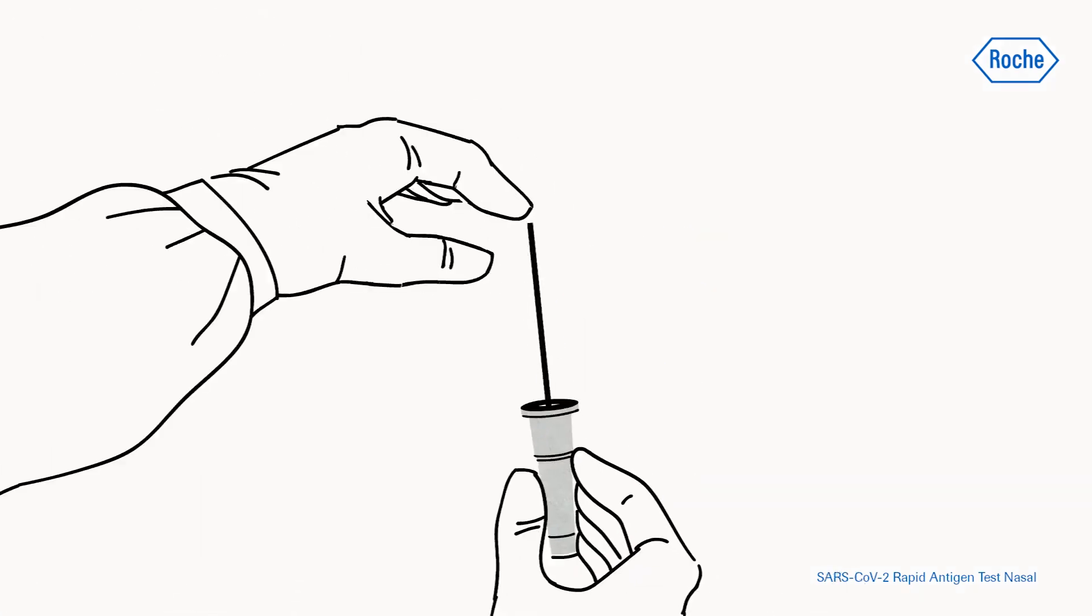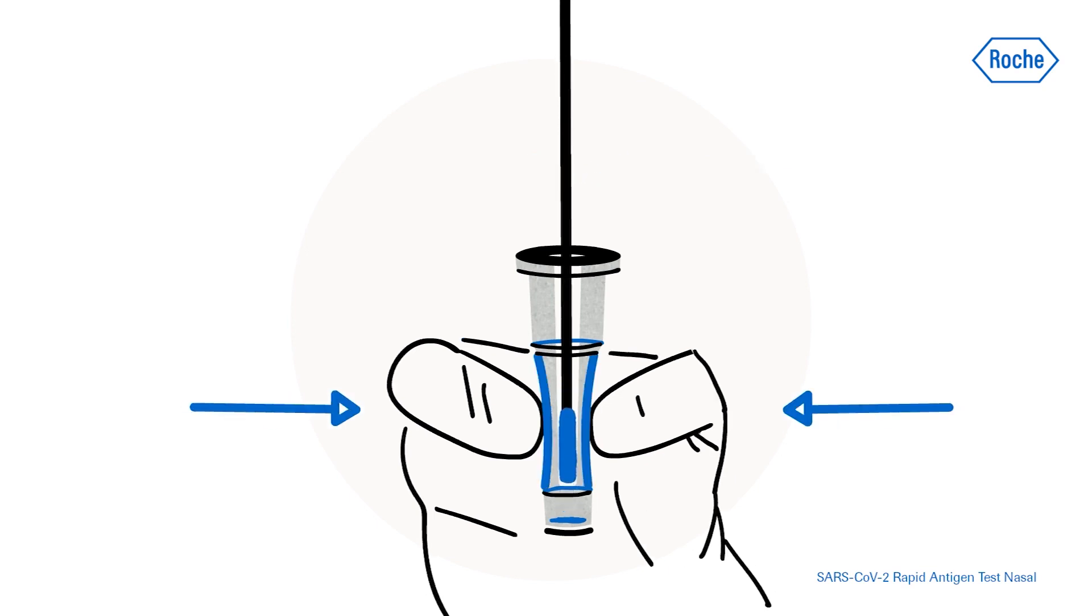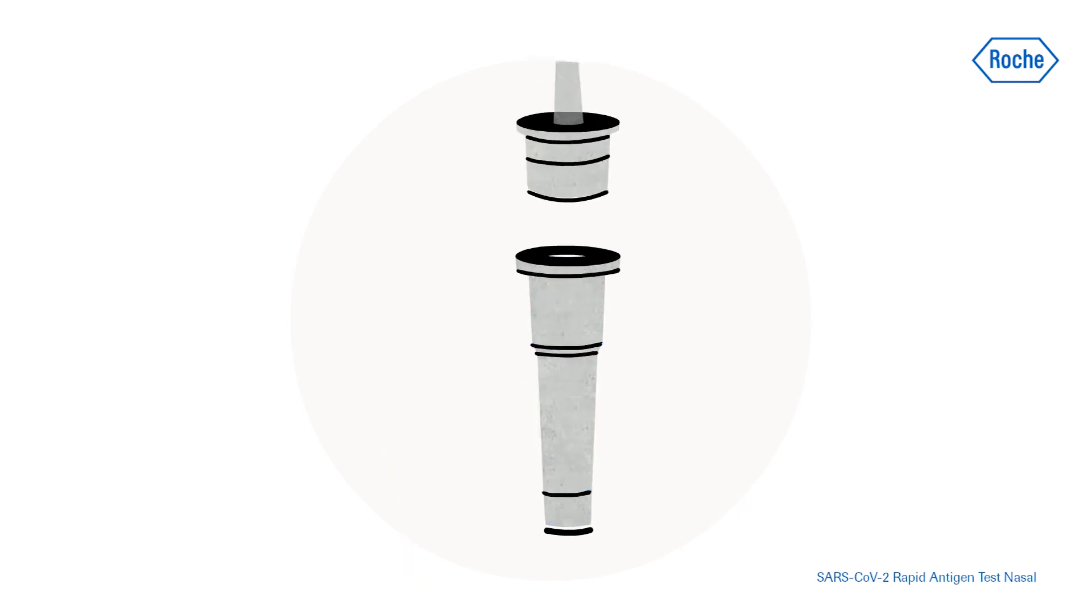Insert the swab into an extraction buffer tube. While squeezing the buffer tube, stir the swab more than 10 times. Remove the swab while squeezing the sides of the tube to extract the liquid from the swab. Press the nozzle cap tightly onto the tube.